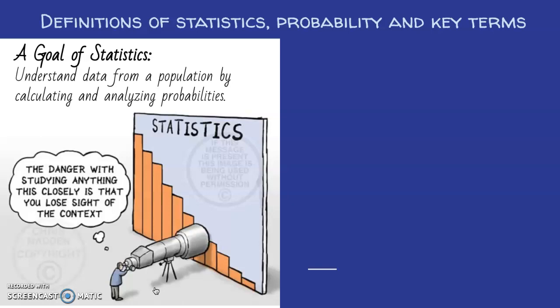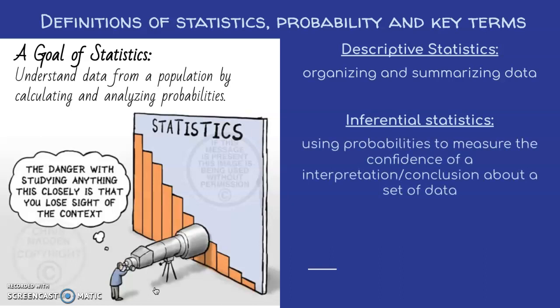We can break statistics into two categories. Descriptive statistics, which is the act of organizing and summarizing data and making graphs. And inferential statistics, where we use probabilities to measure the confidence of a conclusion or interpretation that we make about a set of data which is about a population.